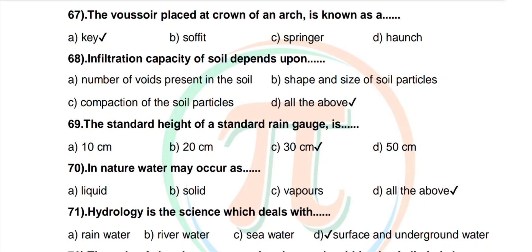Question 68: Infiltration capacity of soil depends upon — options: number of voids present in the soil, shape and size of soil particles, compaction of the soil particles, all of the above. Correct answer: all of the above. Question 69: The standard height of a standard rain gauge is — options: 10 cm, 20 cm, 30 cm, 50 cm. Correct answer: 30 cm.